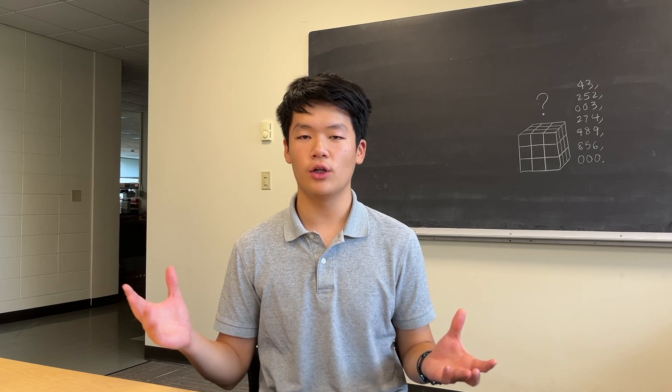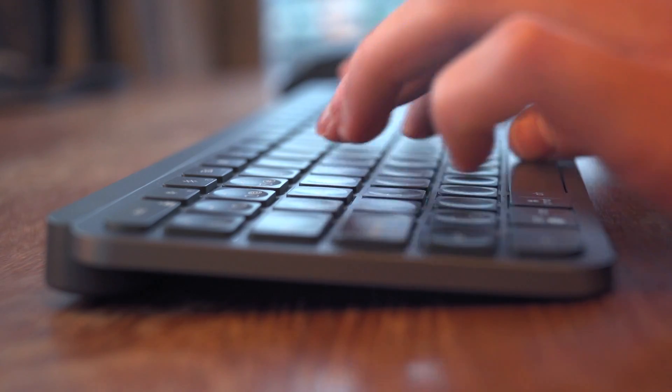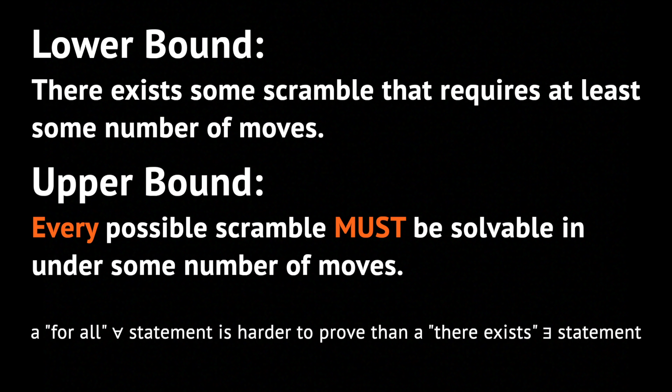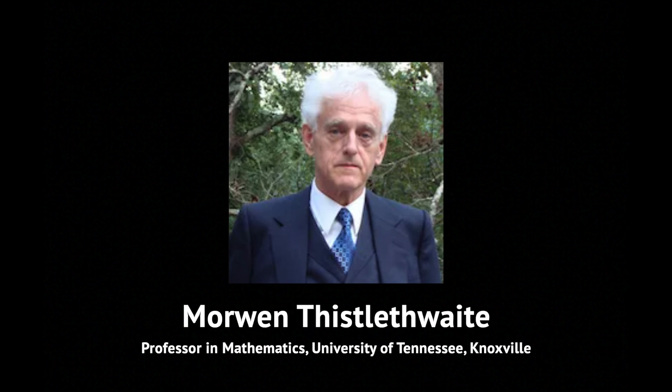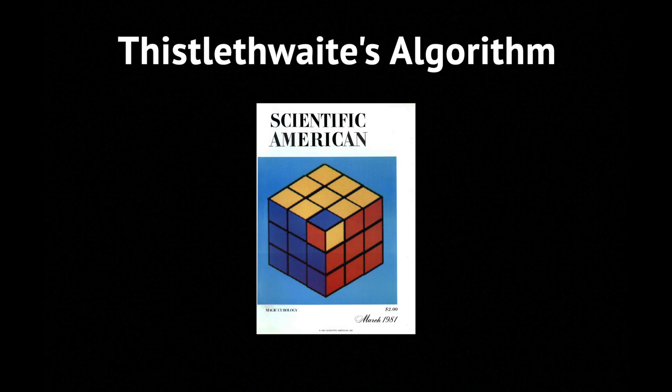Shifting gears now, let's take a look at getting an upper bound for God's number. Unlike the lower bound, finding an upper bound is much more difficult. Rather than saying that there exists some scramble that takes at least some number of moves to solve, we have to prove that every possible scramble can be solved in under some number of moves. In 1981, Professor in Mathematics, Morwen Thistlethwaite, achieved a breakthrough of the upper bound for God's number. He reduced it to 52 moves with Thistlethwaite's algorithm, which was published in Scientific American later the same year.